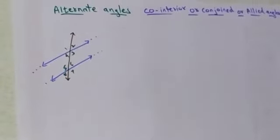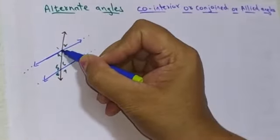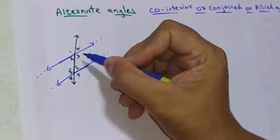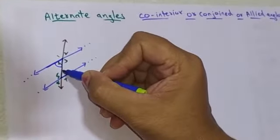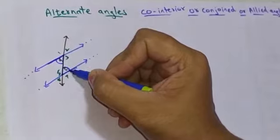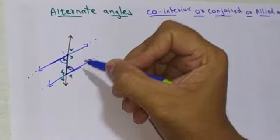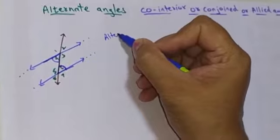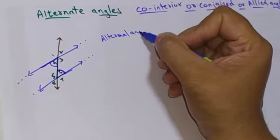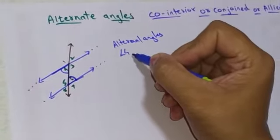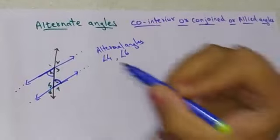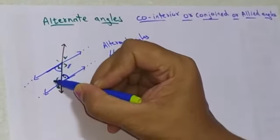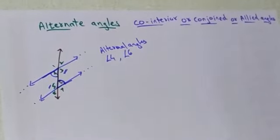First, let us study the alternate angles. Here you can see a Z is formed — one angle from the right-hand side and one from the left-hand side, one from above and one from the lower side. These are the alternate angles. Angle 4 and angle 6 are alternate angles. Again, angle 3 and angle 5 are also alternate angles.